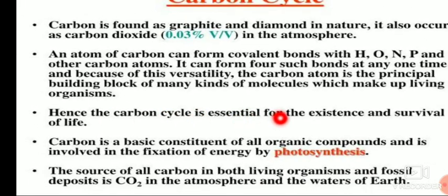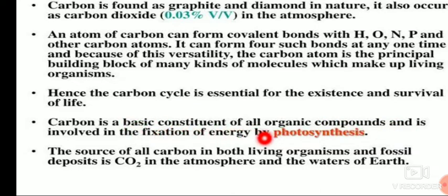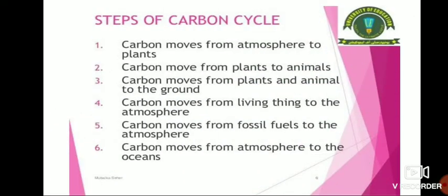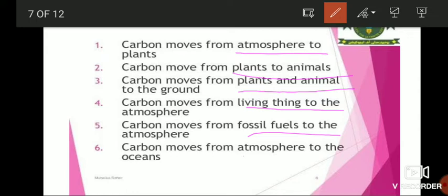Hence the carbon cycle is essential for the existence and survival of life. Carbon is a basic component of all organic compounds and is involved in the fixation of energy by photosynthesis. The source of all carbon — both in living organisms and fossil deposits — is CO₂ in the atmosphere and the waters of Earth. Steps of the carbon cycle: carbon moves from atmosphere to plants; from plants to animals; from plants and animals to the ground; from living things to the atmosphere; from fossil fuels to the atmosphere; and from the atmosphere to the oceans.